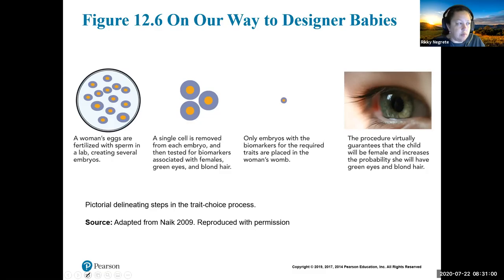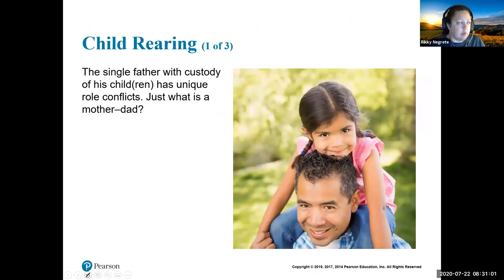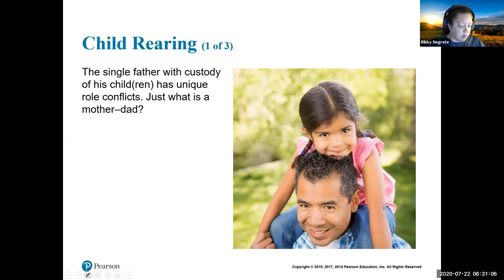It's nerve-wracking to know technology has advanced to where we can pick and choose what we want our child to look like. You're also altering the biomarkers for that child's future children as well, since you're removing certain genes. Research has also been done on altering embryos in relation to diseases like AIDS. It raises the question — if you can adjust this in embryos, what else can you adjust?